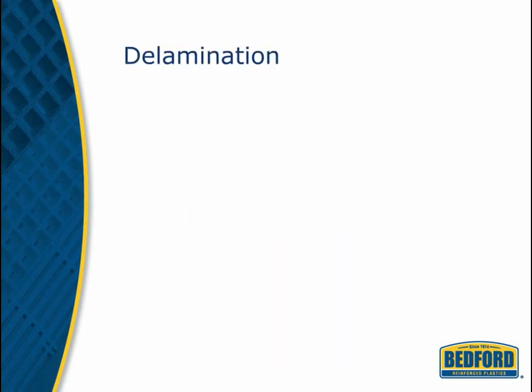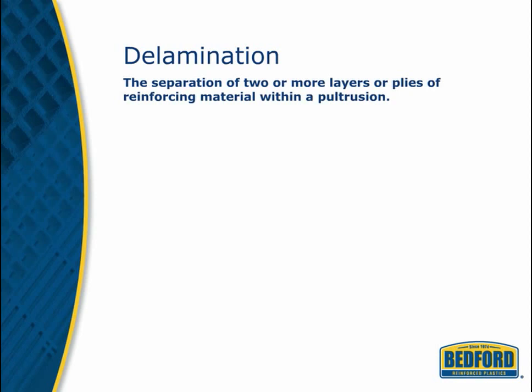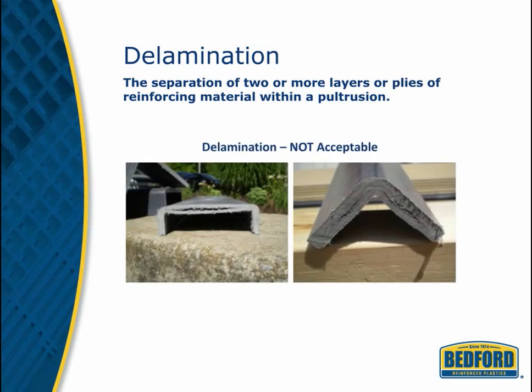Delamination is the separation of two or more layers or plies of reinforcement material within a pultrusion. This defect is not acceptable under any circumstances as it will compromise the structural integrity of the part.